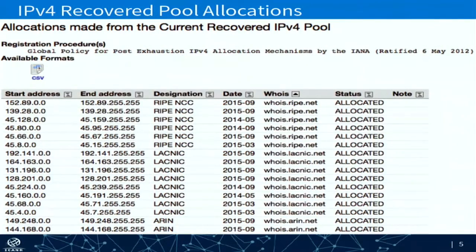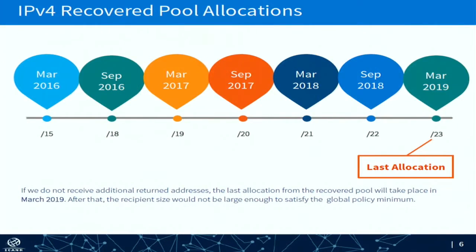You'll see a snapshot of the registry that shows you what was allocated. I tried to catch some LACNIC allocations there — they're down towards the bottom, I think there's three for this address pool. We do allocations from the recovered pool twice a year based on a formula. There's no request that comes to my department, the IANA functions operator — it's a formula, and on March 1st and on September 1st the formula runs and you all get addresses.